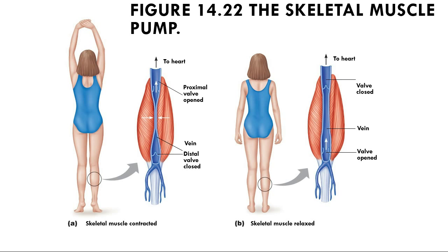The skeletal muscle pump affects both arteries and veins throughout the body. If arterial blood flow is significantly reduced, skeletal muscle organs rely on anaerobic respiration instead of aerobic respiration. A light walk or stroll isn't enough to impair arterial blood flow, but it is enough to enhance venous return back to the heart.